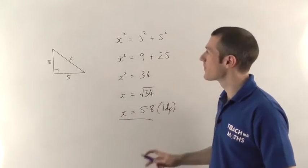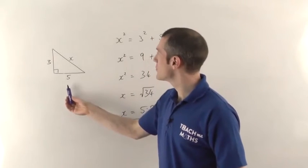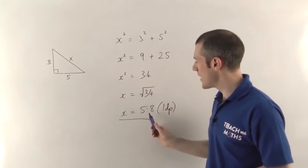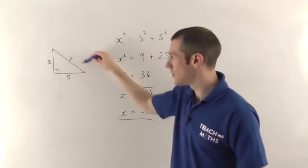So that's the general idea. Find out the areas of those two squares, you add them to get the area of the big square and then square root it to find the length on that side.